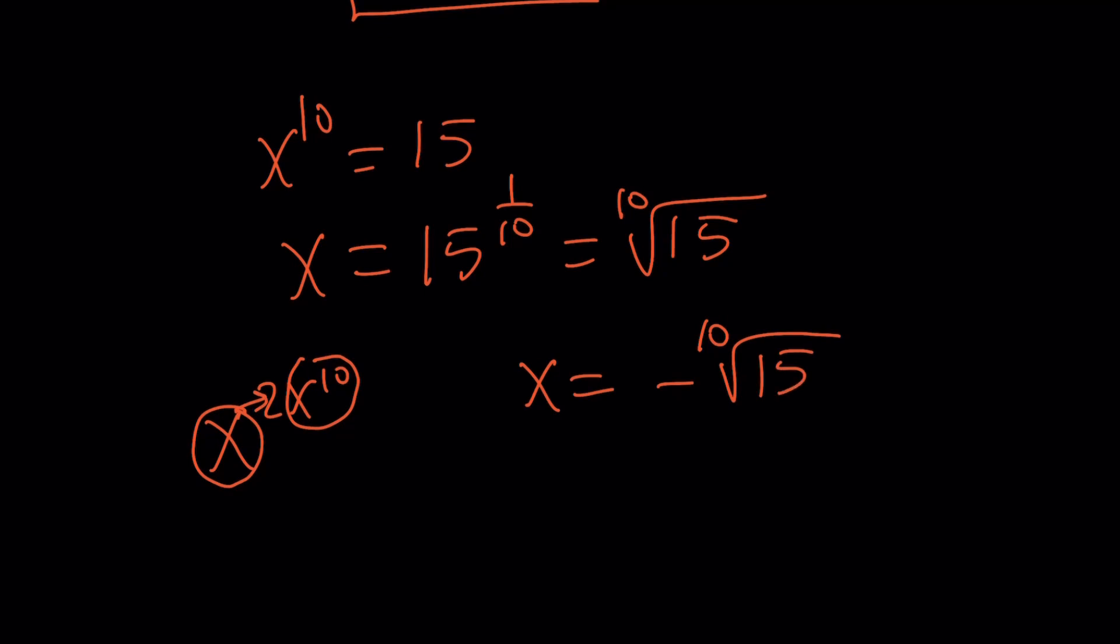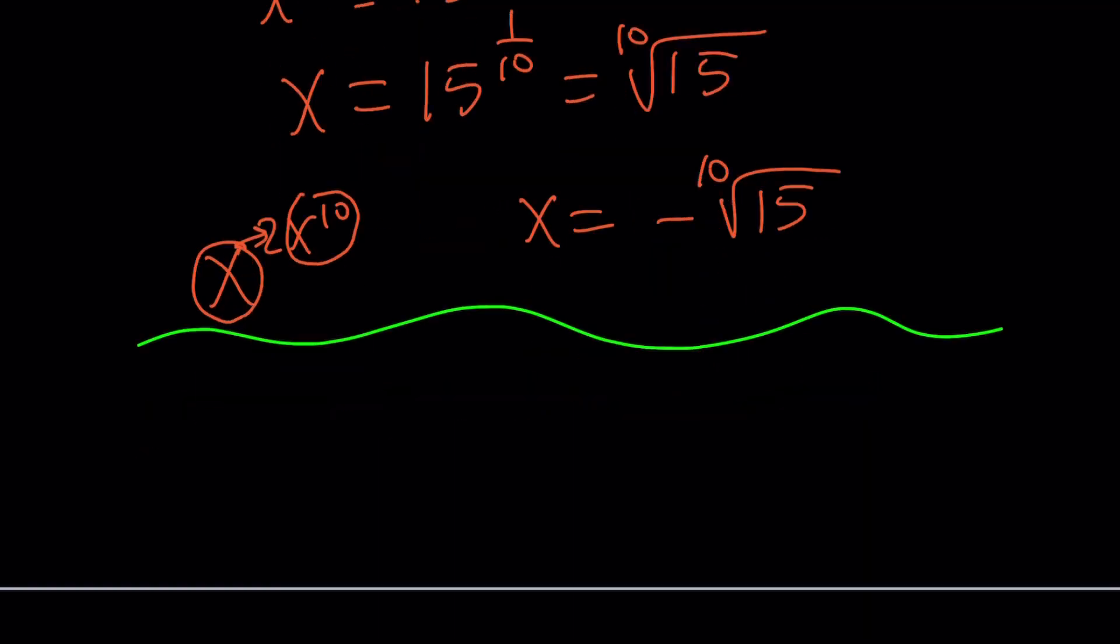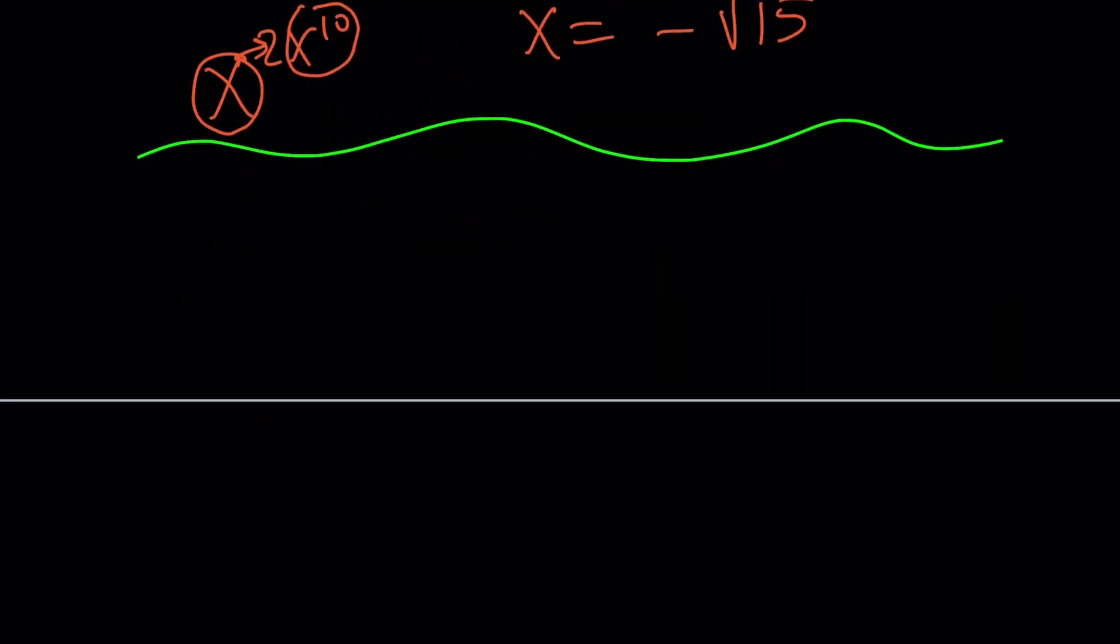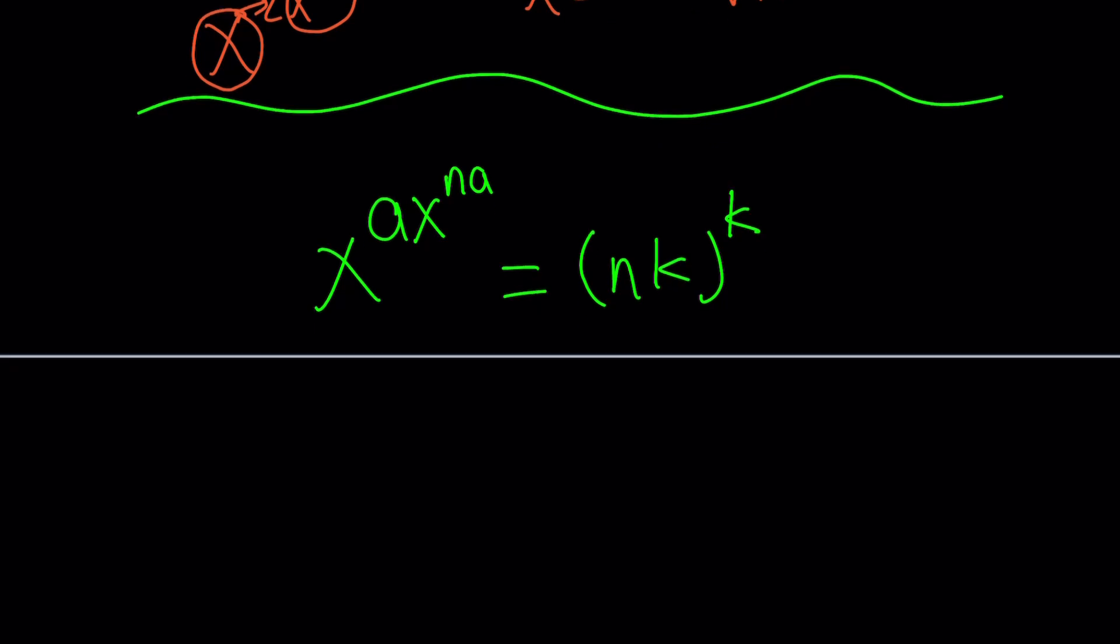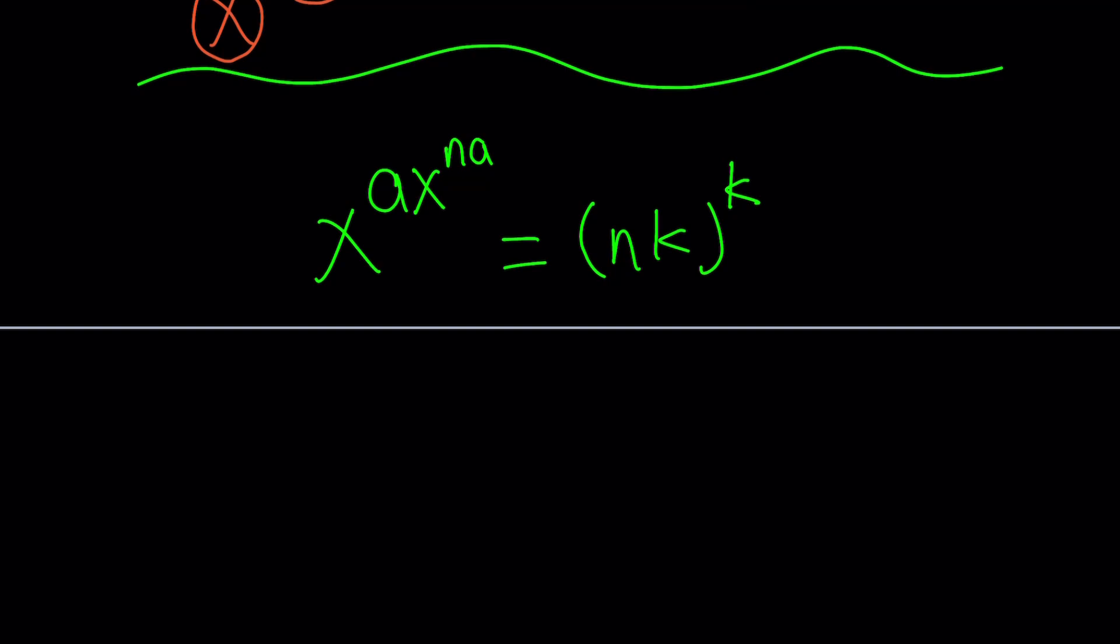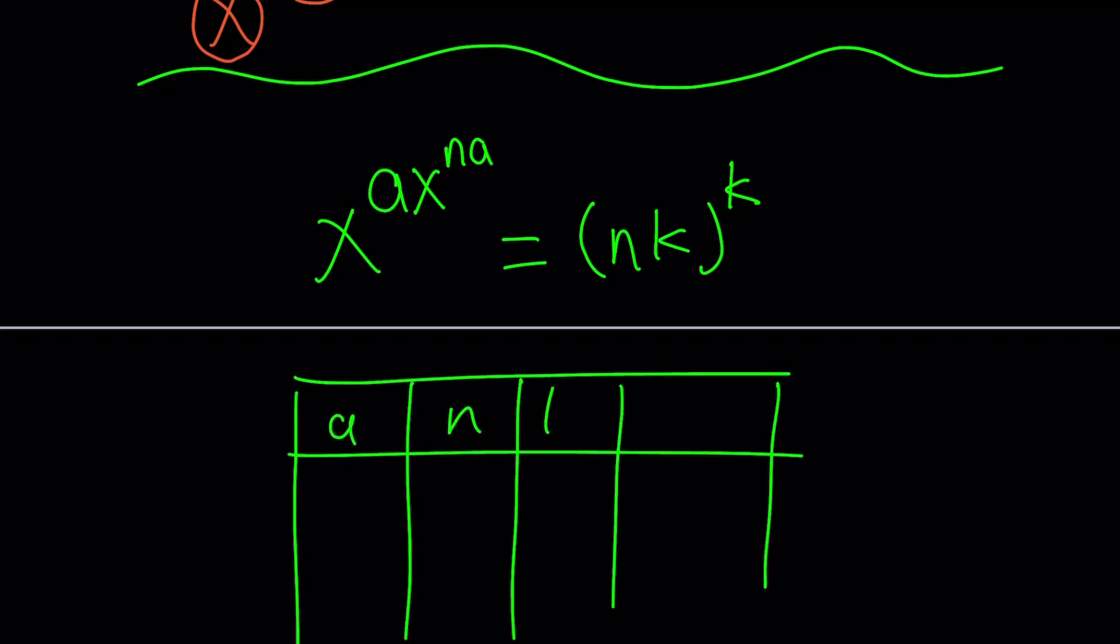Now let me quickly talk about the general form because I promised to do that at the end. The general form for these kinds of equations is x^(ax^na) equals (nk)^k. Here, a, n, and k are integers. They don't have to be, I guess, but I choose them to be integers. By playing with this, you come up with different kinds of equations. For example, this is also another thing that I made when I was bored. I made a table of a and k values and then I came up with different equations.